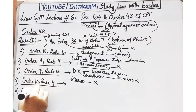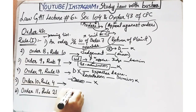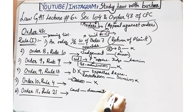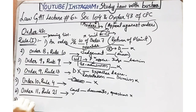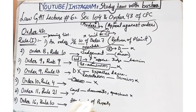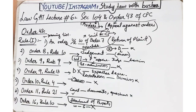Next hai Order 11 Rule 21 - agar court ne kisi bande se kisi case mein koi documents demand kiye hain, woh bande ne woh documents court ke andar produce nahi kiye, ya court ke questions ke answer nahi de raha, to us surat mein bhi court ne jo order pass kiya hai, us order ke against bhi aap appeal file kar sakte ho. Next hai Order 16 Rule 10 - agar kisi witness ko court ne summon kiya tha aur woh witness court mein appear nahi hota, to agar court ne koi order pass kiya ke uski property ko attach kar diya jae, yeh jo attachment of property ka order hai, iski against bhi appeal file ki ja sakti hai.